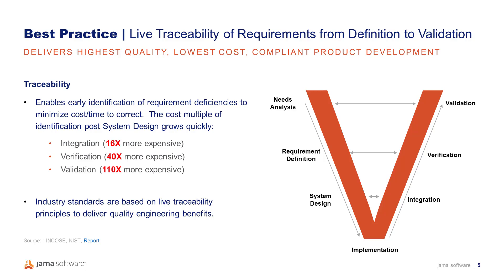Many, if not most of you, are familiar with the V model — you can see a representation here. Live traceability is a component where different pieces of data that impact the product development lifecycle need to be very dynamic throughout the process. Verification and validation need to happen much earlier, and maintaining live traceability between all different product development components and assets is critical to optimizing your development lifecycle.